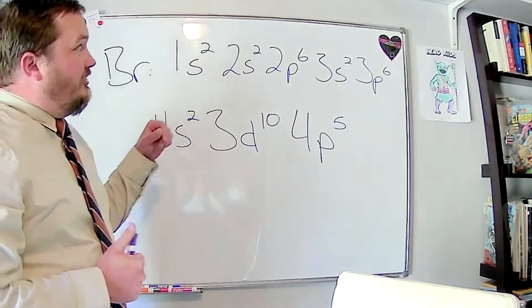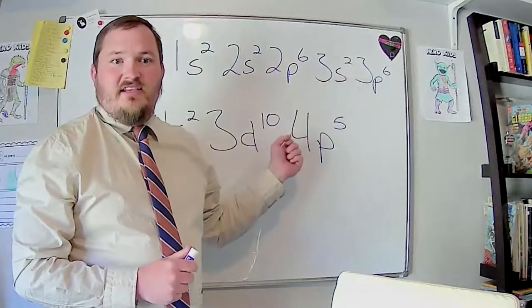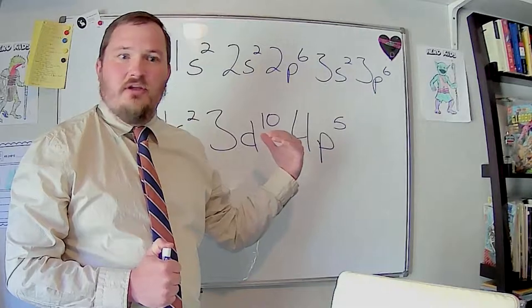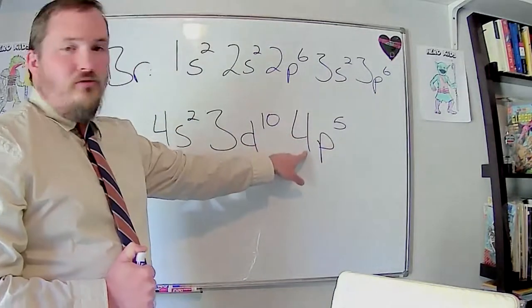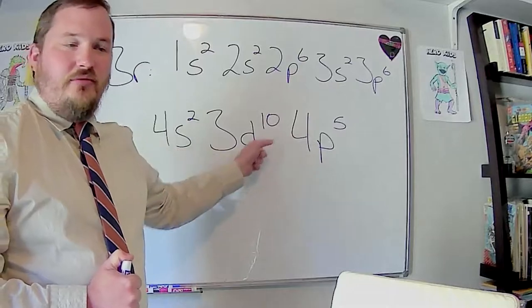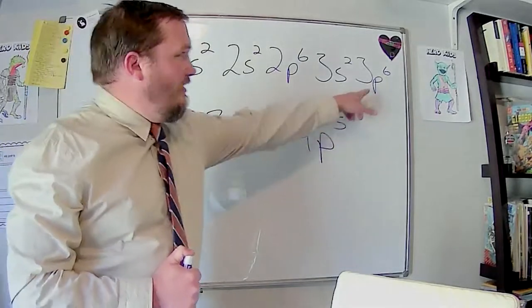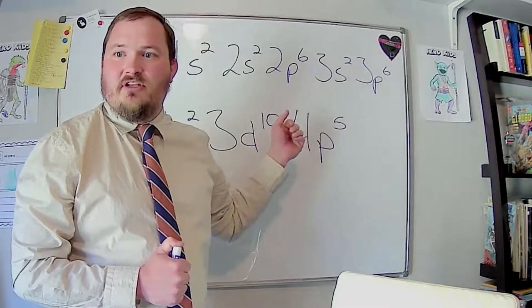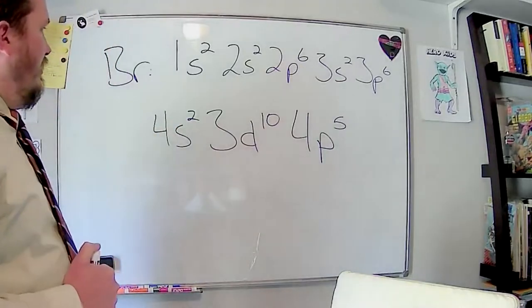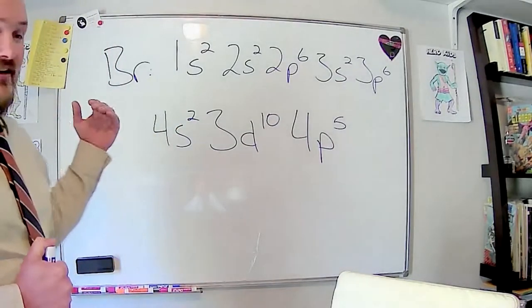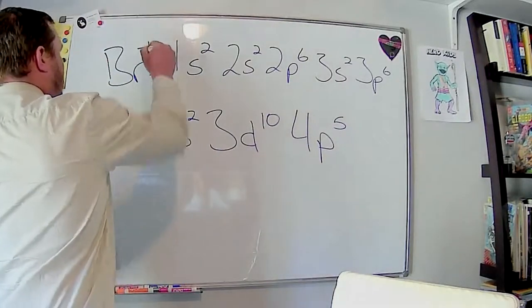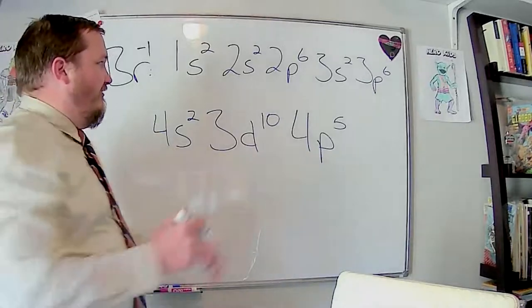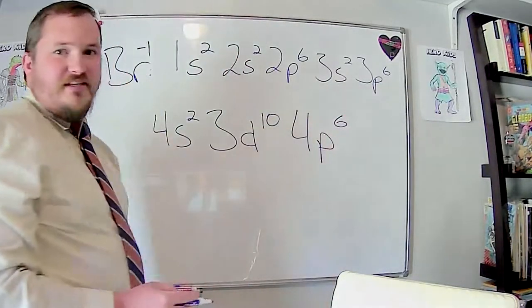A tip about electron configurations: you will never duplicate the same orbital again. Once you've filled up an orbital, you're not going to see it again in the same electron configuration. If you forgot to flip back to 4p after filling 3d, you might wind up with 3p twice — that should be a red flag. You should never have the same orbital twice in the same electron configuration. For bromide, which has the negative one charge, we just have one extra electron: instead of 4p5, it becomes 4p6.